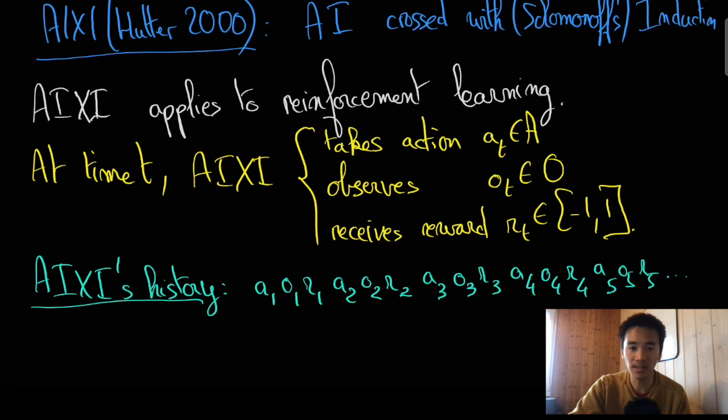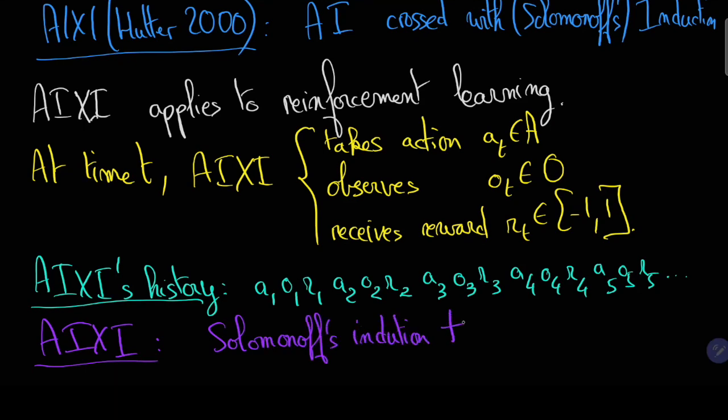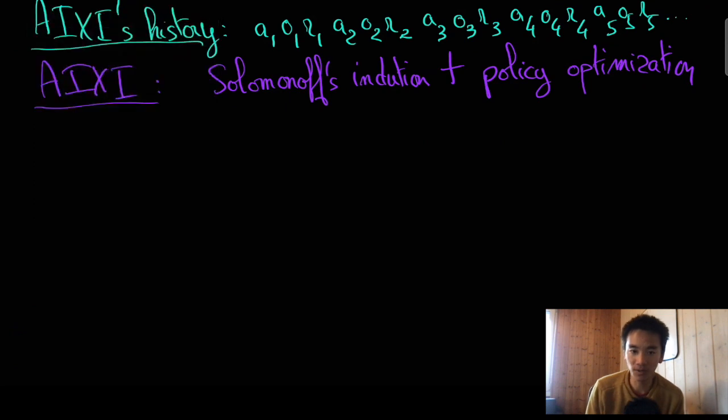Now, AIXI is a solution to the reinforcement learning problem, which is obtained by combining essentially two components: Solomonoff's induction on one hand, and policy optimization on the other hand. The first component, Solomonoff's induction,